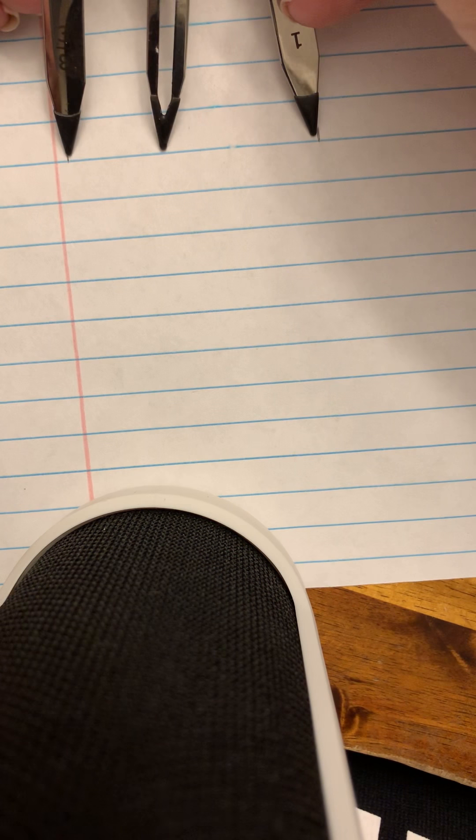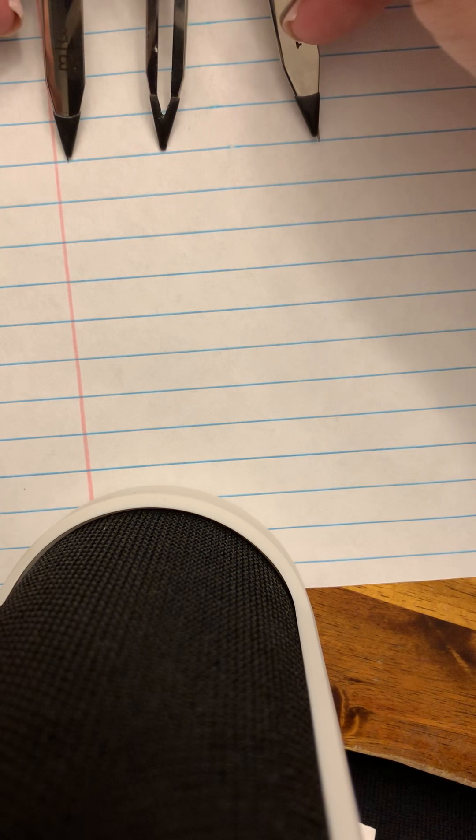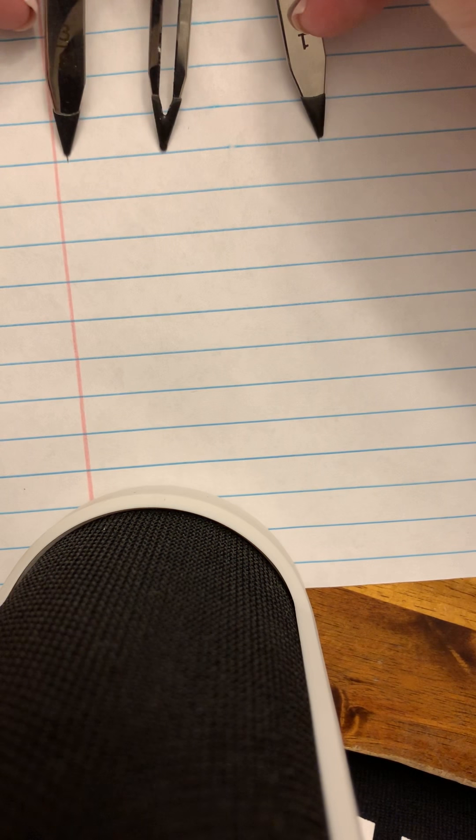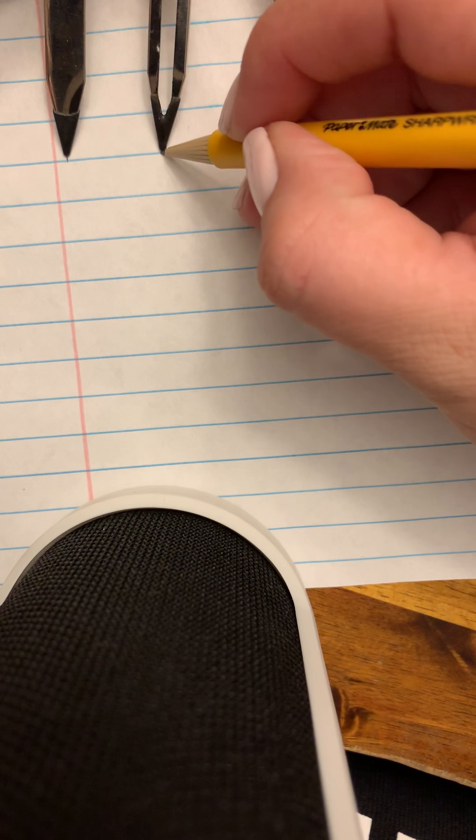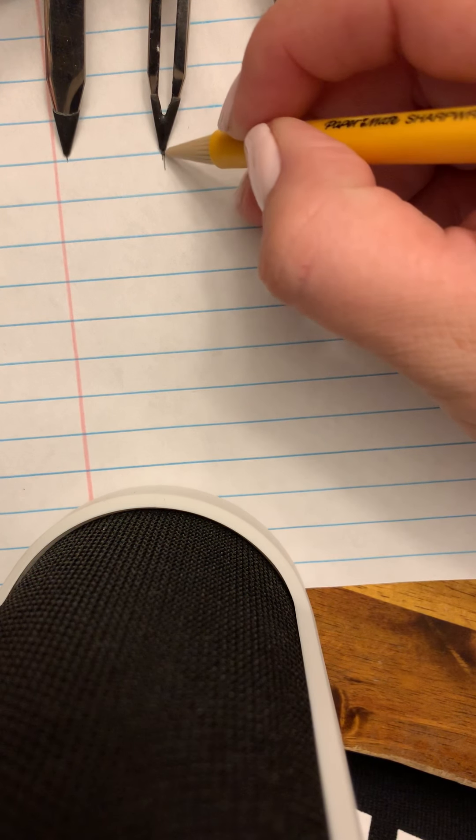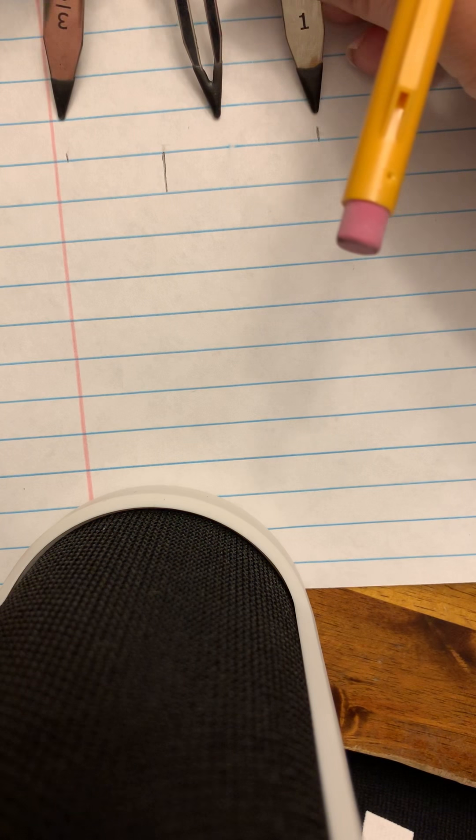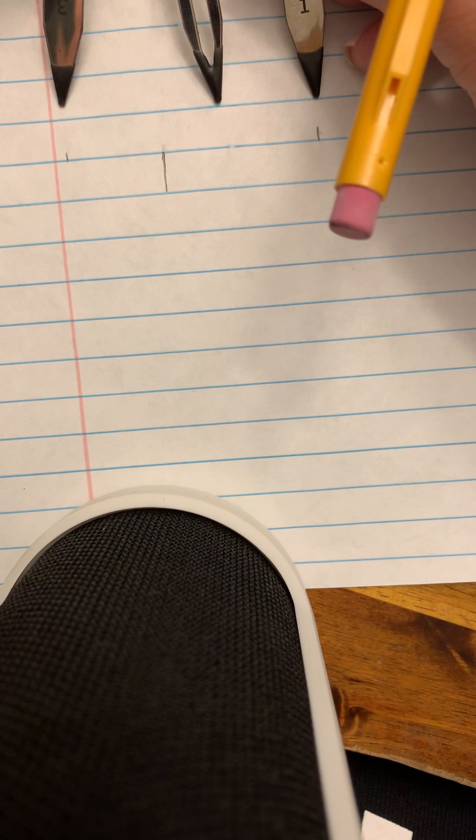We're going to go up here and measure this. This is going to be your five. I like to bring it down a line. So we're going to flip it over and find the six - I'm sorry, the two, excuse me.